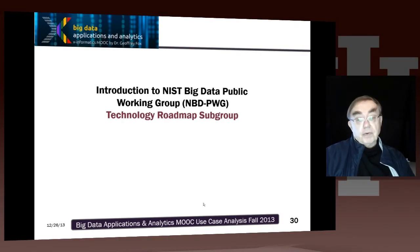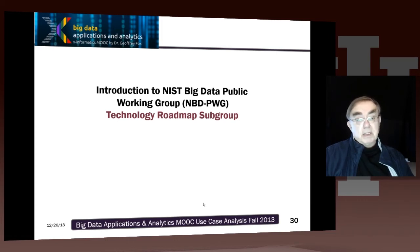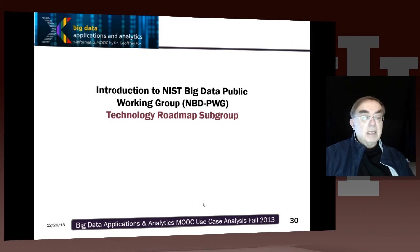The final subgroup before the use case is the technology road map subgroup. This section probably made less progress than the others, because it's very difficult to make a road map when you don't know what the technology is. The technology was only coming out of the use cases and the reference architecture groups towards the end of the three-month process.